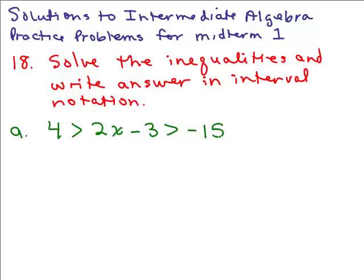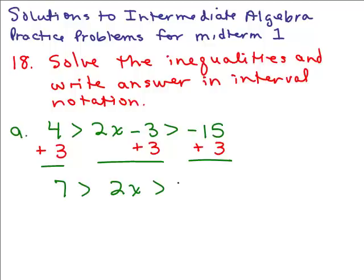You could solve this all at once or you could break it up into two statements and do and. I think it's easier to do all at once. So I'm going to try to isolate x in the middle here. So I want to add 3 to all 3 parts to preserve the inequality. And that'll give you 7 is greater than 2x is greater than negative 12.